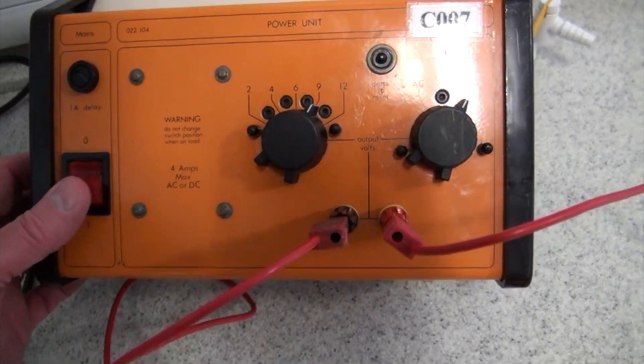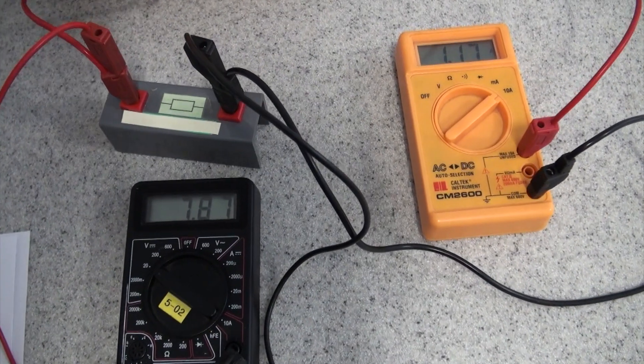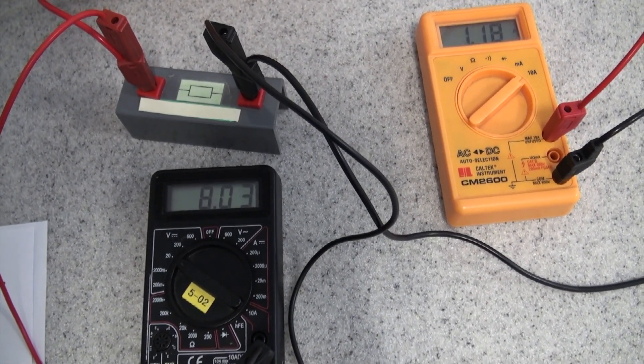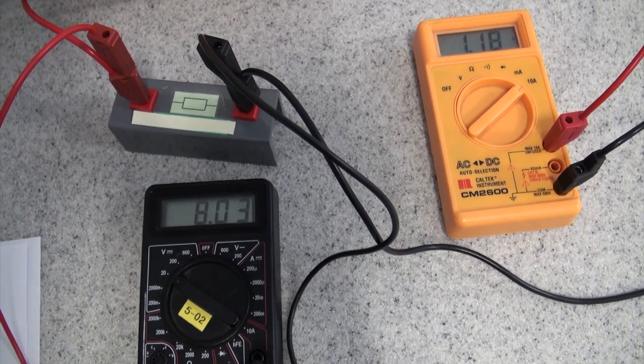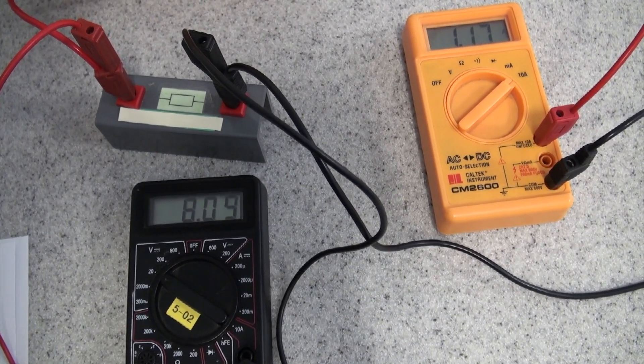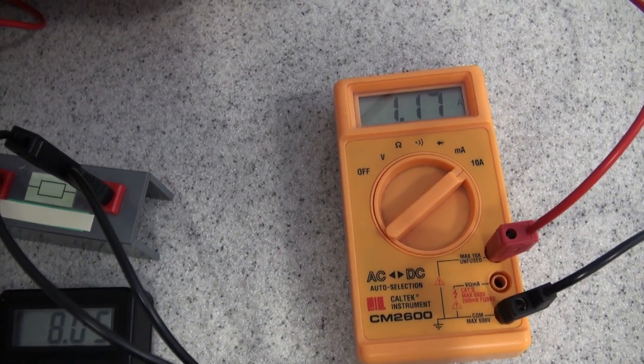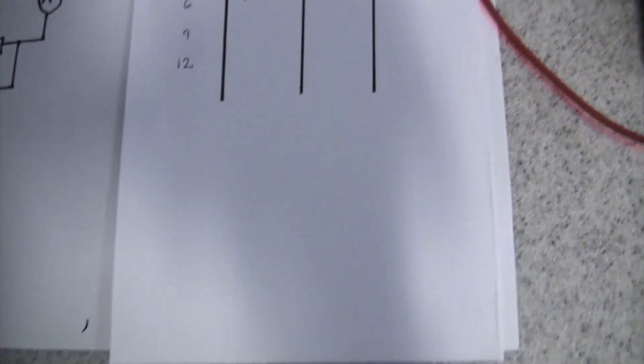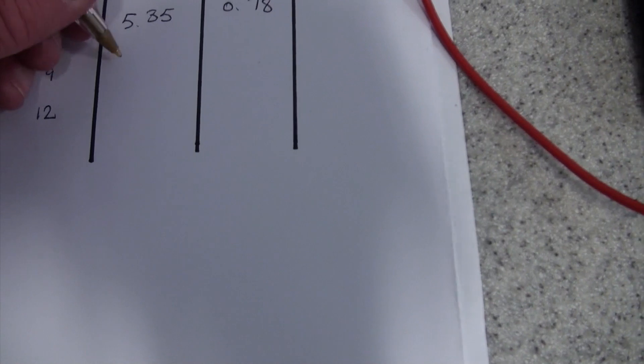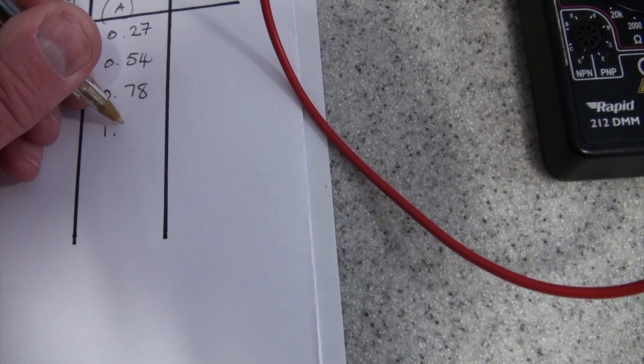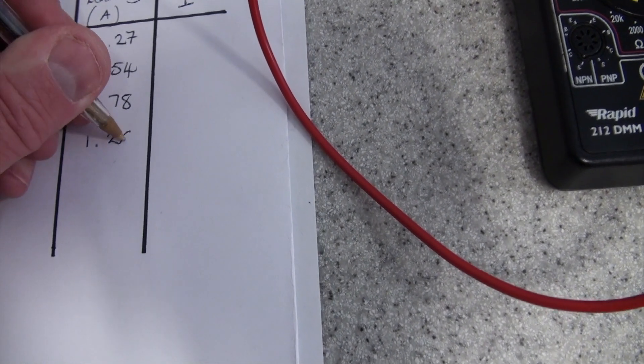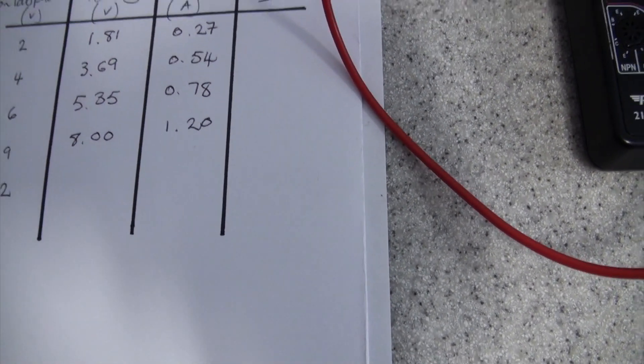Okay, going up to 9 volts. I'm turning it off in between so the resistor doesn't overheat. My lab pack's set at 9 volts. We're getting 8 volts on the voltmeter. And 1.2.